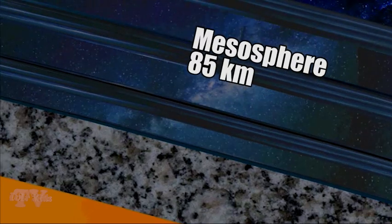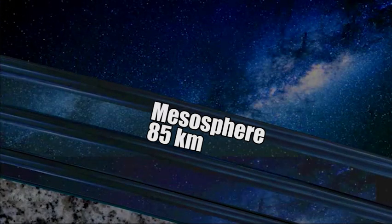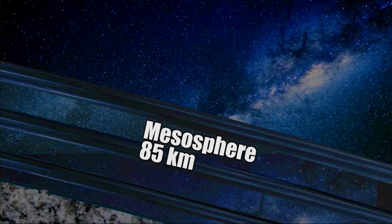The mesosphere, thickness of 35 km, ends at an altitude of 85 km above sea level. There is a low density of air, but enough that most meteorites burn in it.